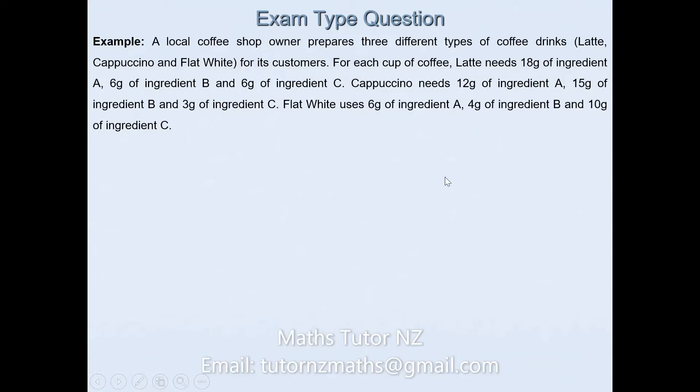We'll have a look at the example. I've already covered the merit part to this problem in my previous video. If you haven't already, please do check that video out. The question says a local coffee shop owner prepares three different types of coffee drinks: latte, cappuccino, and flat white for its customers. For each cup of coffee, latte needs 18g of ingredient A, 6g of ingredient B and 6g of ingredient C. Cappuccino needs 12g of ingredient A, 15g of ingredient B and 3g of ingredient C. Flat white uses 6g of ingredient C.